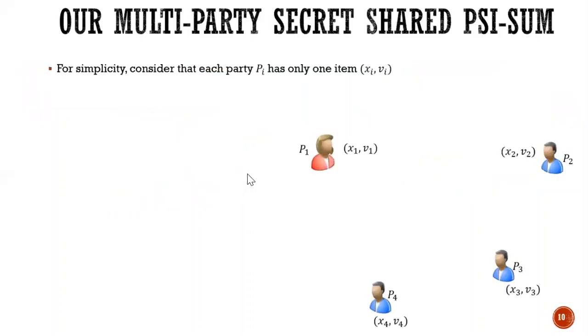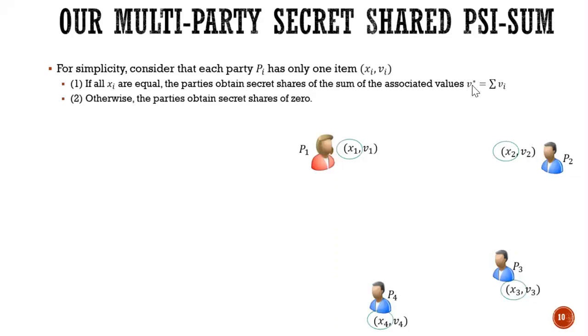All right, so going into our constructions. For simplicity, we consider each party PI has only one item. So XI and VI. And here we have four parties in this slide. The main goal is that if all XIs are equal, the parties have the secret share of sum VI star. And otherwise, parties obtain the secret share of 0.